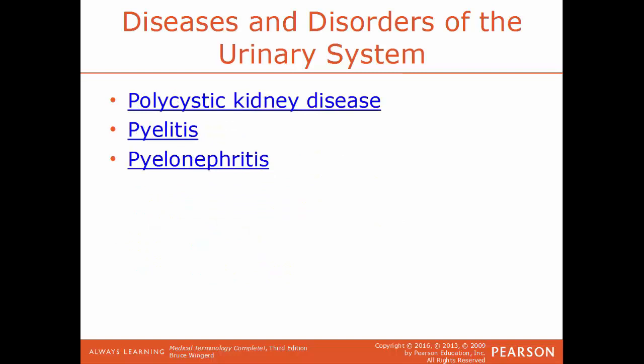Polycystic kidney disease, or PKD, is a genetic disorder where abnormal cysts develop inside the kidney. These cysts may vary in size and, even though they're not malignant, having large growths — usually multiple cysts — within the kidney will greatly impact how well it functions. Pyelitis is the inflammation of the renal pelvis.